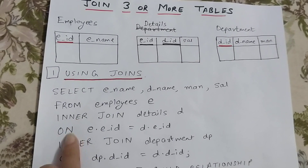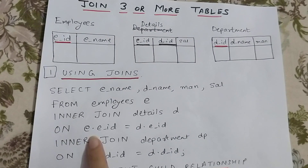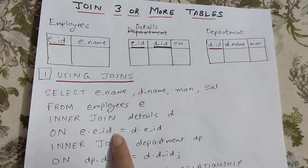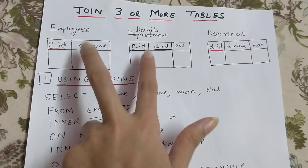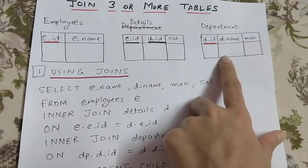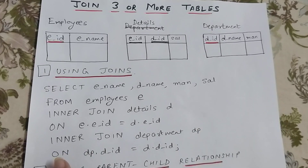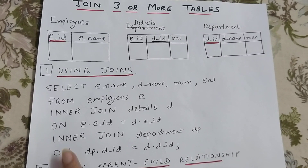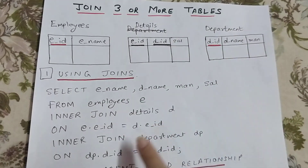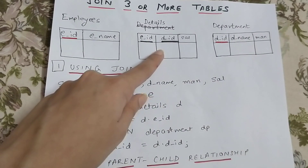When we write INNER JOIN we also have to write ON with the common attribute. So: ON E.EID = D.EID. Then we write another INNER JOIN for the department table, giving it an alias DP, and ON DP.DID = D.DID.